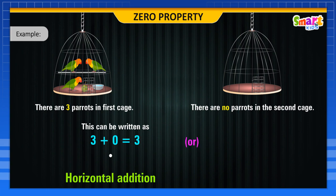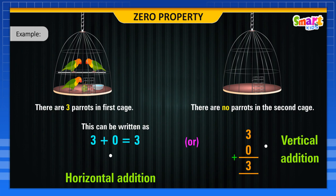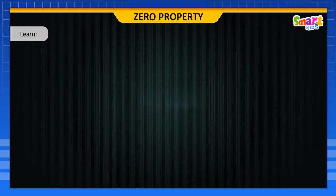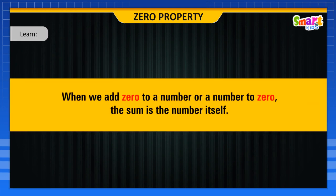Or, three plus zero is equal to three, which is called vertical addition. When we add zero to a number, or a number to zero, the sum is the number itself.